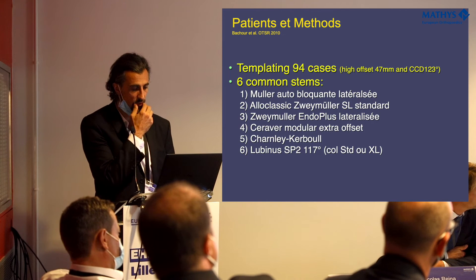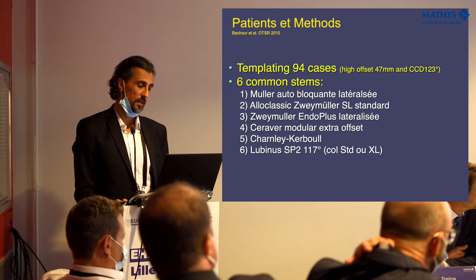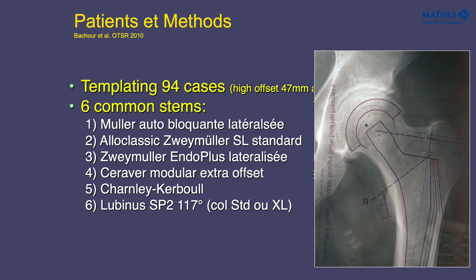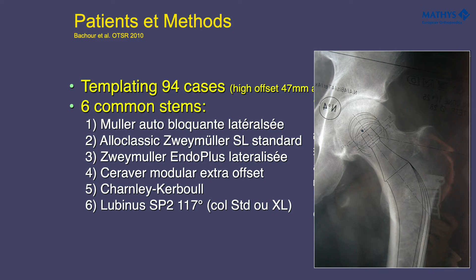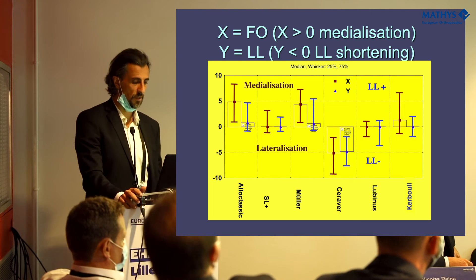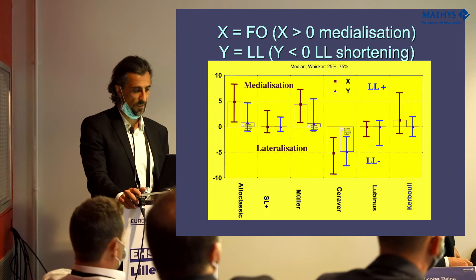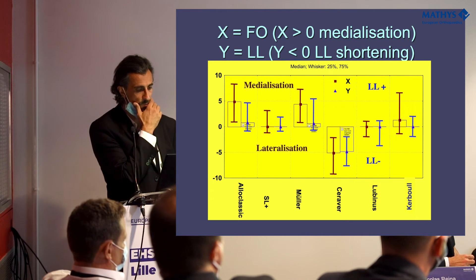We made a study on templating of difficult cases with more than 90 cases with high offset — mean offset 47 millimeters — and low CCD with coxa vara at 123 degrees, using the six common stems in my institution: the Müller Alloclassic, the Zweymüller, the Zweymüller lateralized, the Ceraver modular extra offset, the Charnley Kerboull, and the Lubinus SP to 170 degrees. As you can see on the graph, for most stems we have medialization — a decrease of femoral offset — and shortening with a decrease of leg length, which is not ideal for perfect restoration of biomechanical parameters.